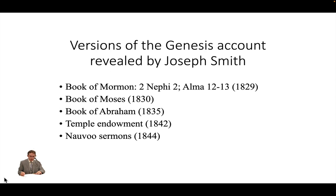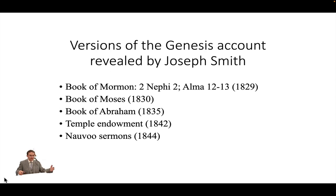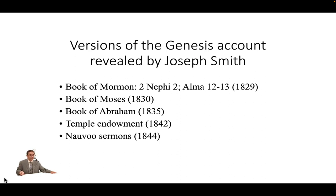In 1842, in the upper room of the Red Brick Store in Nauvoo, Joseph Smith began to reveal what would become the Temple Endowment, an ordinance containing narrative elements that included once again a new version of the Genesis account. Finally, the King Follett Discourse and another Nauvoo sermon in 1844 showed that Joseph had interacted once again with the Genesis account and received new insights. By providing insights into multiple ancient dispensations — much like the superimposed lenses of a telescope — Joseph Smith's revelations of ancient scripture helped to prepare the Saints for the ultimate telescopic experience of the Temple Endowment.